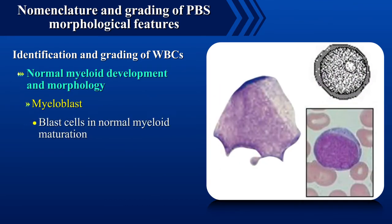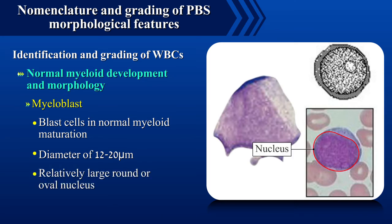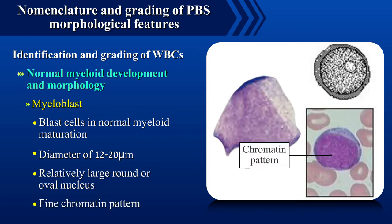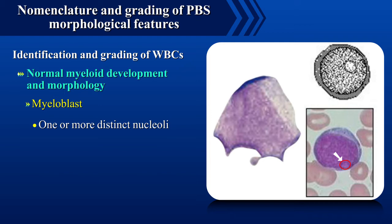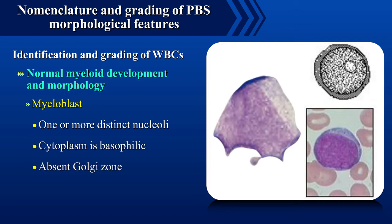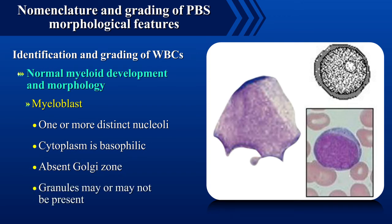Myeloblasts are blast cells in normal myeloid maturation having a diameter of 12 to 20 microns and a relatively large round or oval nucleus with a fine chromatin pattern and one or more distinct nucleoli. The cytoplasm is basophilic with an absent Golgi zone, and granules may or may not be present.